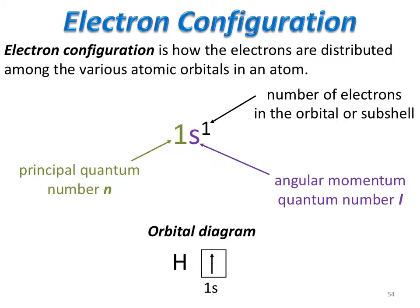When writing an electron configuration, you first write the principal quantum number. You then give the angular quantum number as the orbital type. And then, as a superscript, you designate the number of electrons that are in that orbital — if it's an S orbital — or in the subshell for P, D, and F subshells.